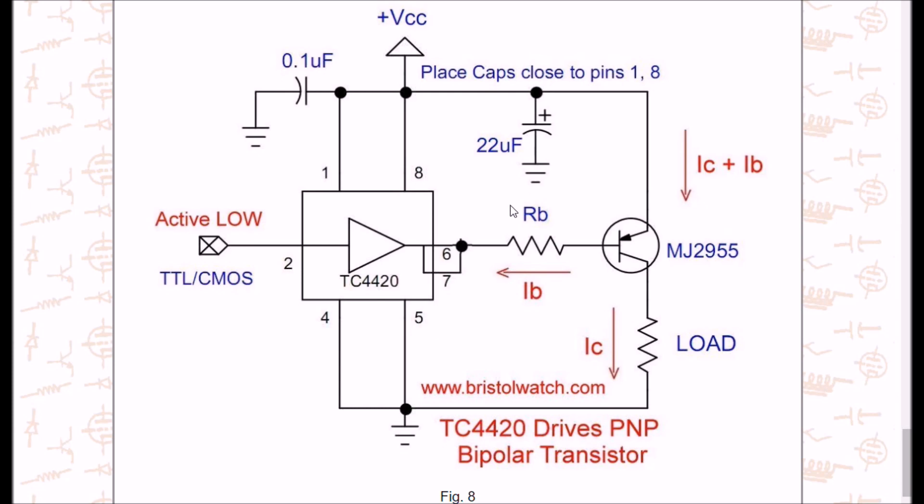Again, the advantage is the output on the TC4420 or 29 can sink considerably more current than what an Arduino, PIC, or Raspberry Pi can. The input takes care of all your interfacing. Doesn't matter if it's 3-volt or 5-volt logic, CMOS, TTL, doesn't matter. And I tried this out. It seemed to work very well.